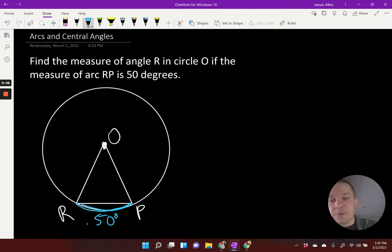Now we know that the arc is equal to the measure of the central angle, so that's also 50 degrees. Okay, well how am I going to find the measure of angle R, which is right here, only knowing one angle of a triangle?